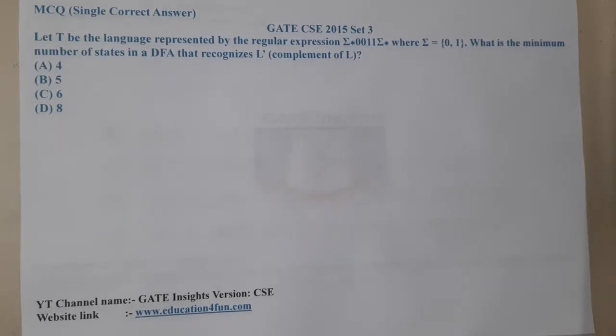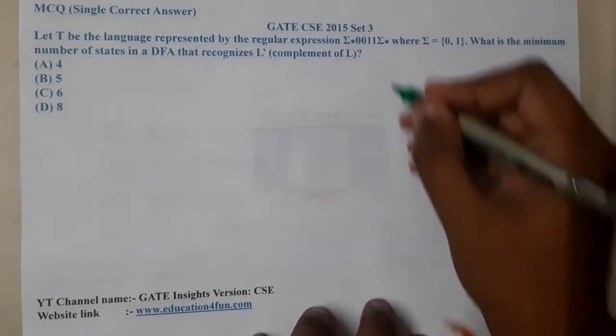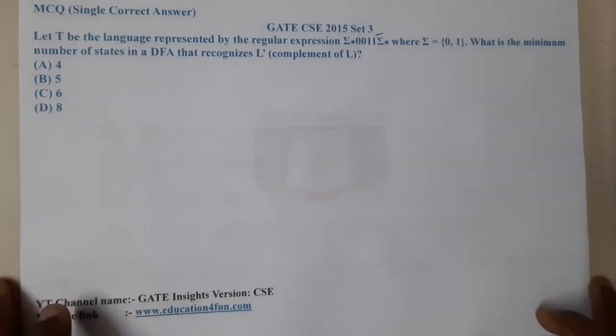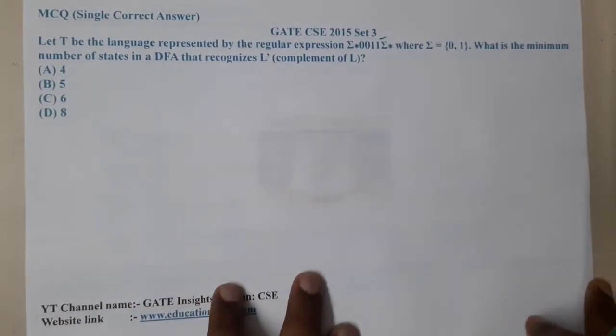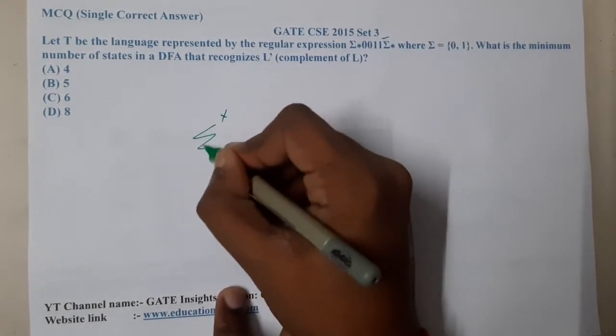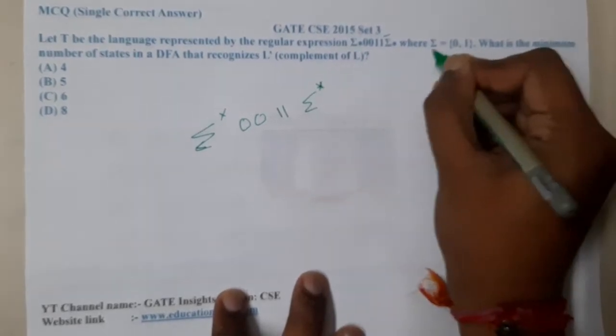Hello guys, we are back with our next lecture. In this lecture, let us go through the next question. This question belongs to GATE CSE 2015 Set 3. The given question is: let the language accepted by the regular expression is sigma star 0011 sigma star, and they are saying the sigma is 0,1.